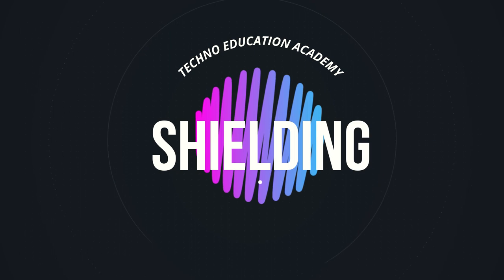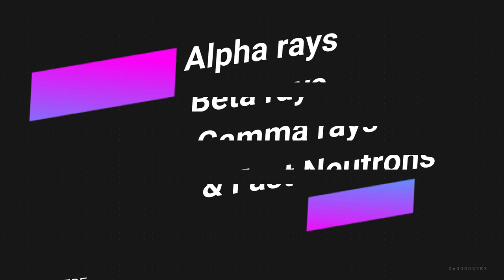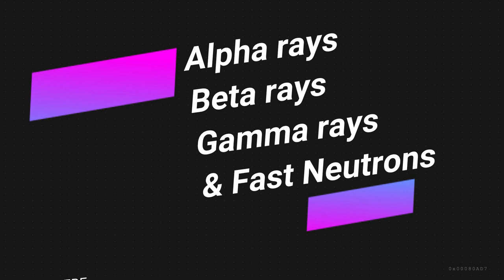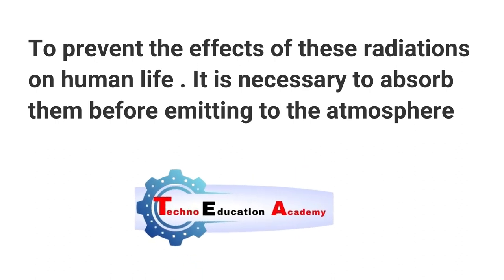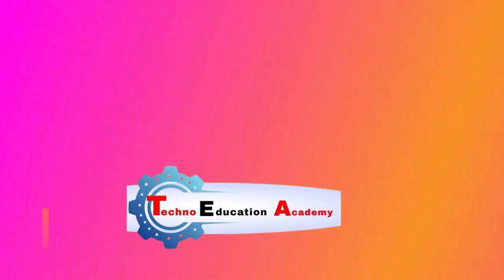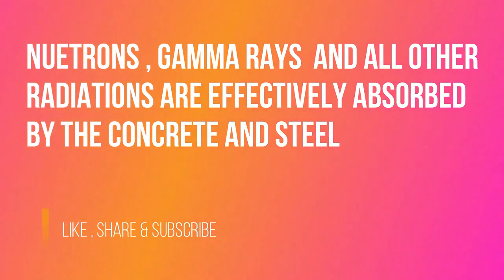The next one is shielding. Here you can see this is the biological shield provided in nuclear reactor. The common radiations from reactors are alpha rays, beta rays, gamma rays, and fast neutrons which are very harmful to human life. To prevent the effect of this radiation on human life, it is necessary to absorb them before emitting to the atmosphere.